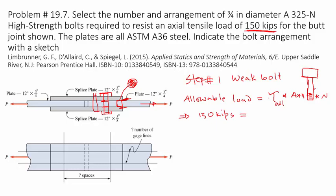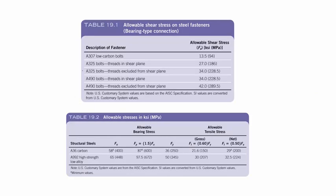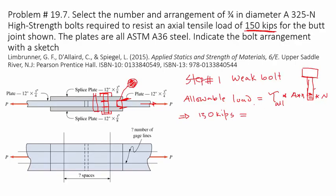The allowable stress can be found from the table in the appendix of the book. Looking at the table for the bolt, which is A325N — meaning no threads in the shear plane — the allowable stress for the bolt material is 27,000 pounds per square inch. So that's 27 KSI times the area pi/4 times D squared, times the number of planes which is 2 in this case, times N. Solving for N gives 6.29 bolts.